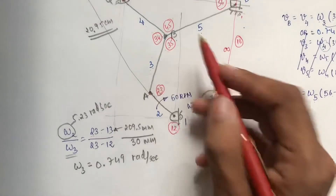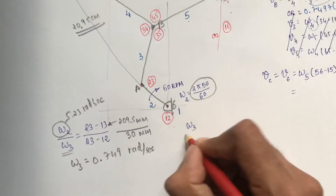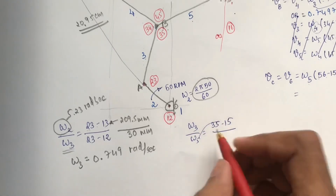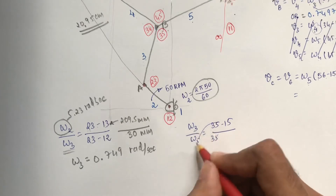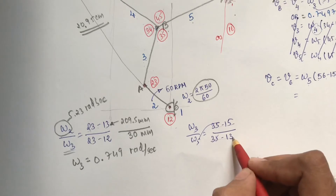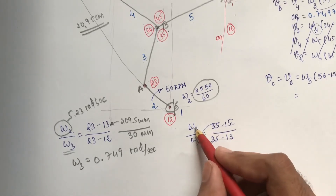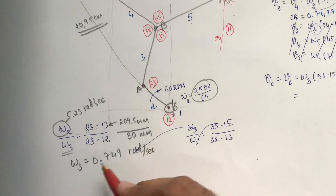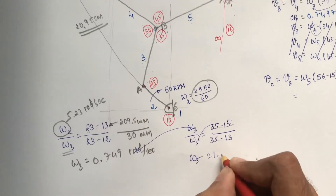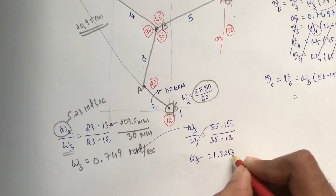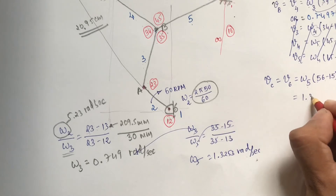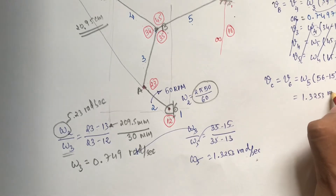Using omega_3 = 0.749 rad/s and measuring distances IC 3-5 to IC 1-3, and IC 3-5 to IC 1-5 from the diagram, we calculate omega_5 = 1.3253 rad/s.